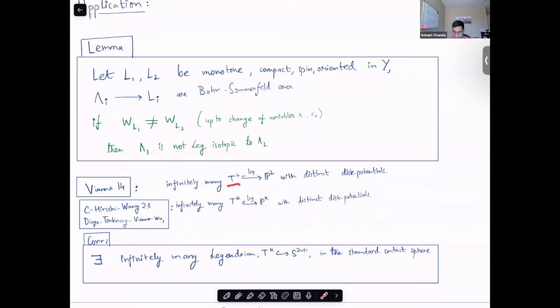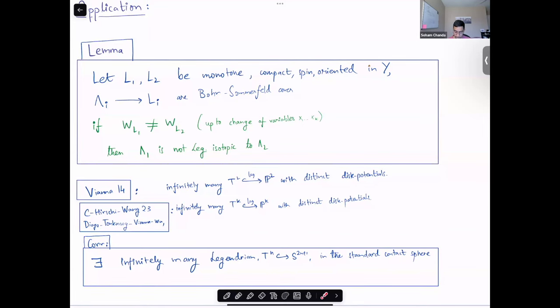We can apply this to the case of, let's say, monotone torii in projective spaces. Indeed, in 2014, Vianna showed that there's infinitely many Hamiltonian isotopic classes of monotone torii inside P^2 with distinct disk potential by computing the Newton polytopes. Later, me and my collaborators Hershey and Wang in 2023, and in upcoming work of Diogo, Tonkonog, Vianna and Wu, there's a proof for the case of any projective space of any dimension by following Vianna's methods. And thus, since we know that the disk potentials are distinct, we know that their lifts will have different Legendrian isotopic classes. So, we get that for any standard contact sphere, we have infinitely many Legendrian torii in them.